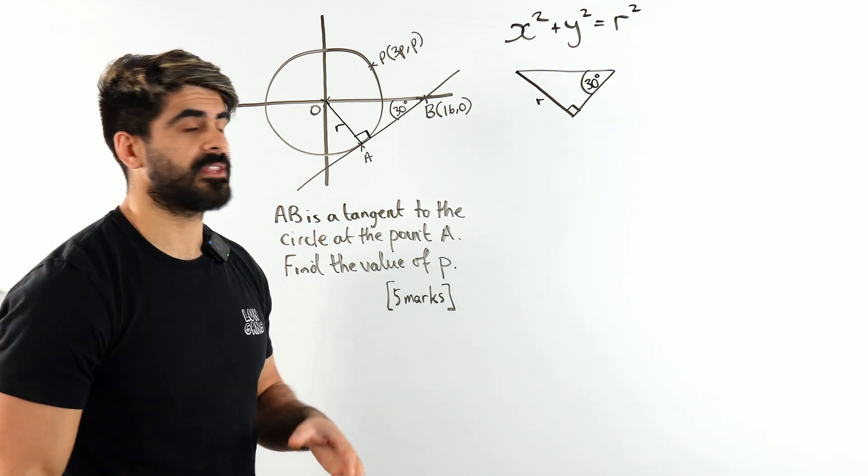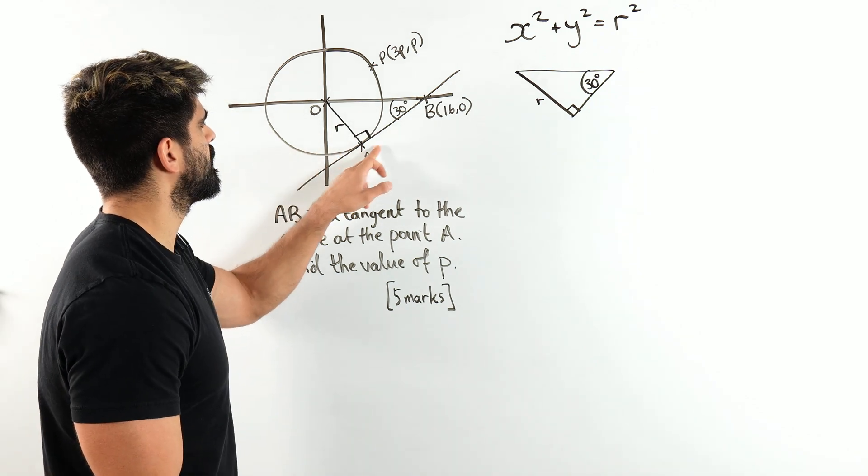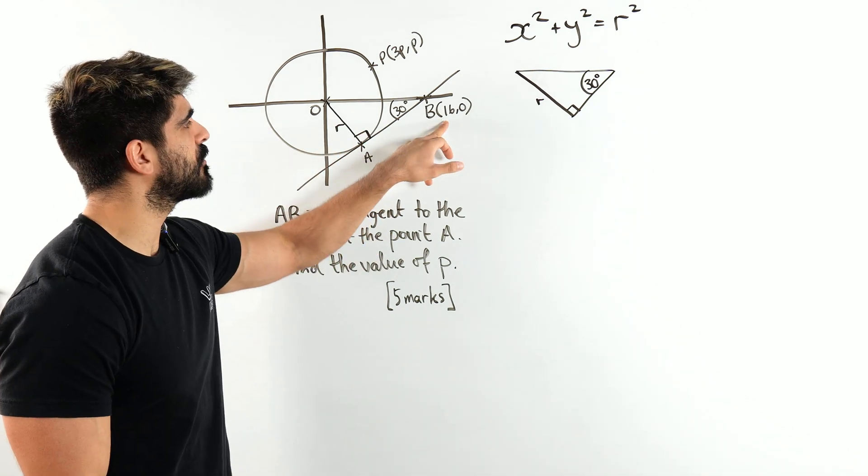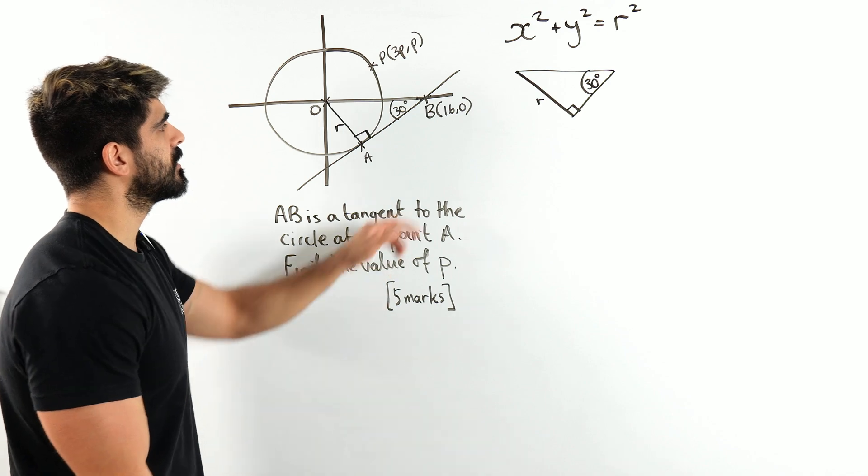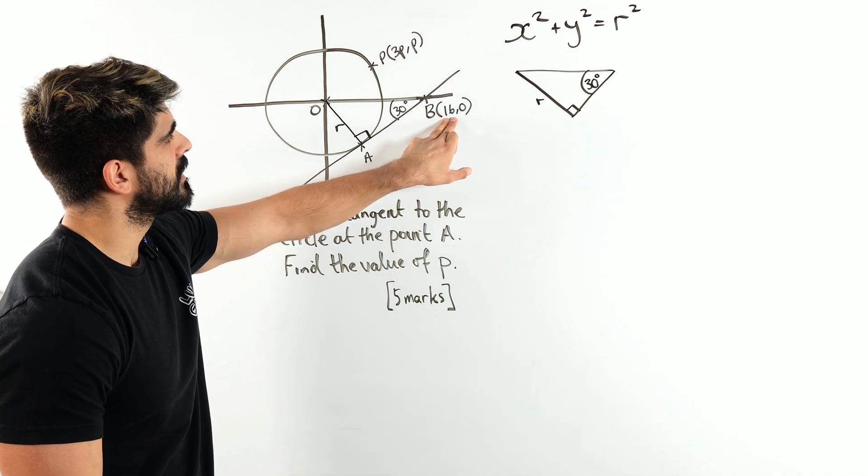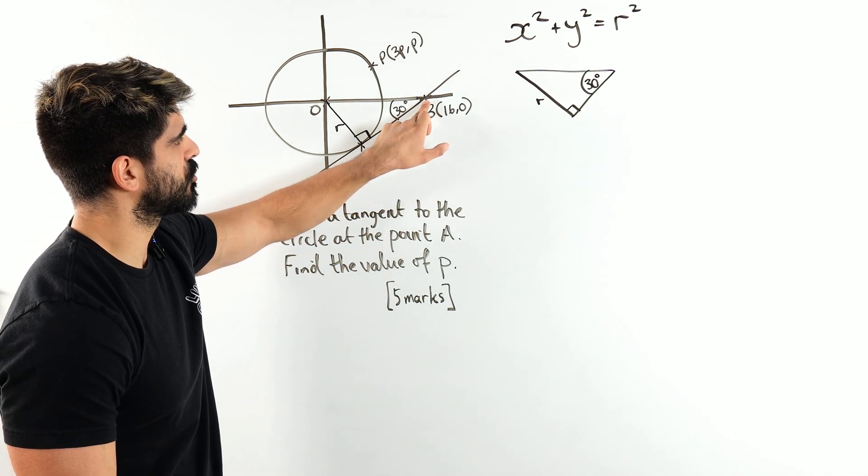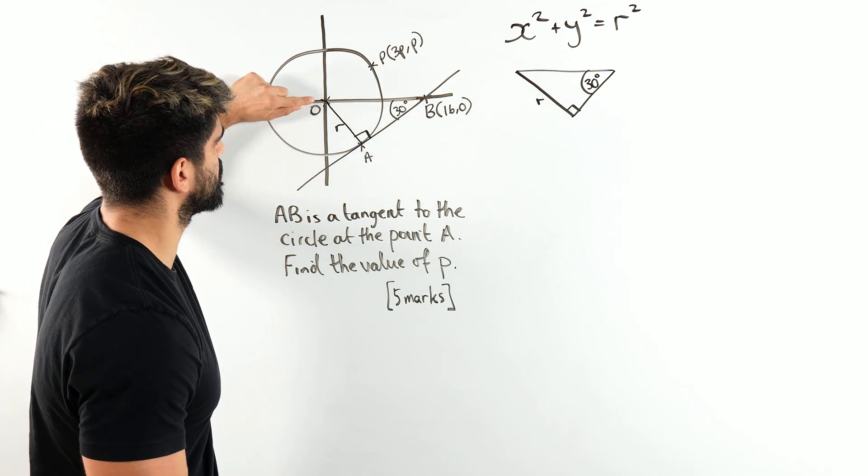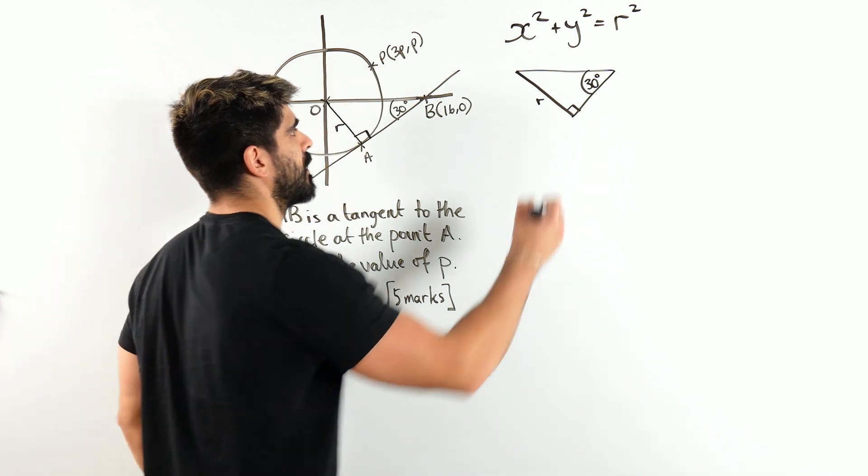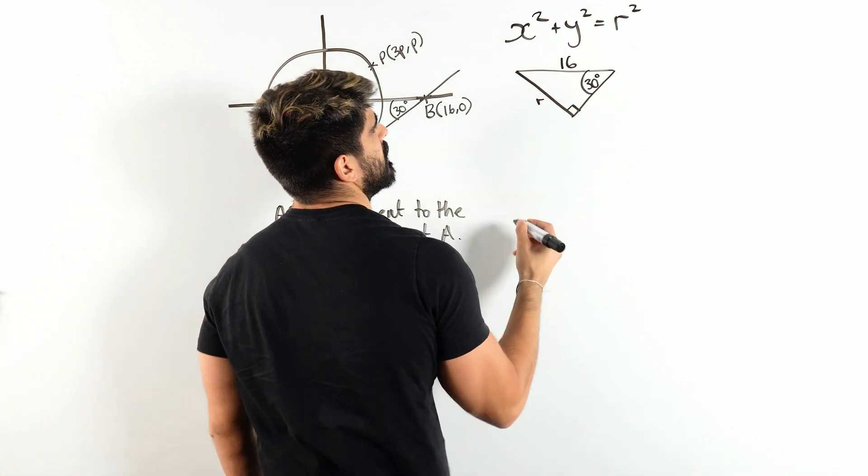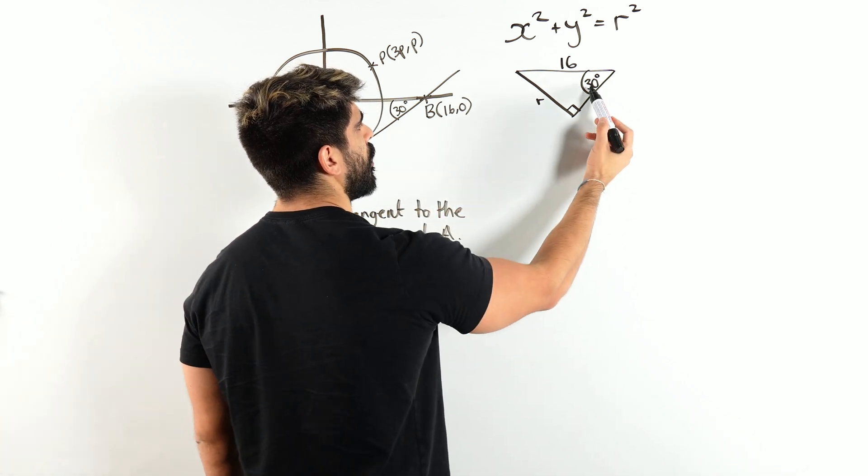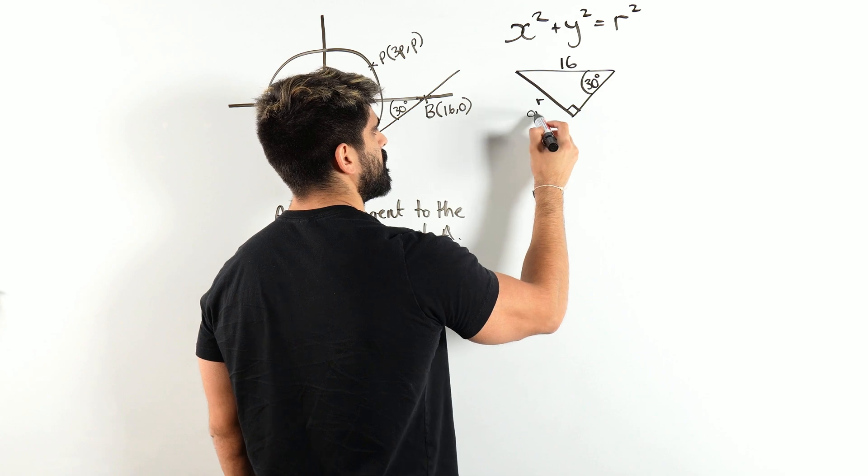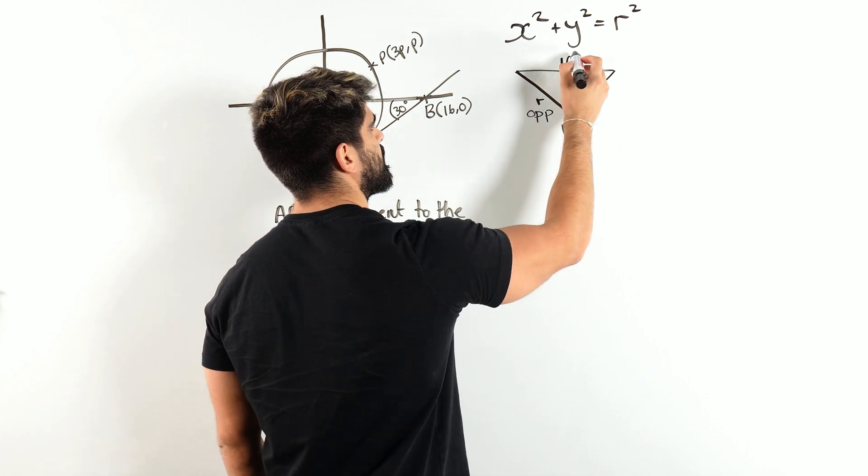Do we have another length here? So we have this. AB, I mean, we have the coordinates of B, we don't have the coordinates of A. Usually they do give it to you, but the only thing they give you is this 16. Now 16 being where the tangent crosses the x-axis is this length. This horizontal distance is 16. Nice.